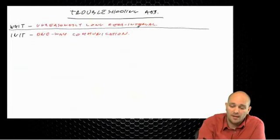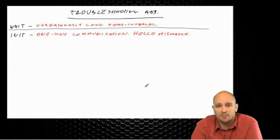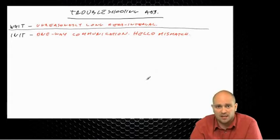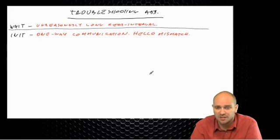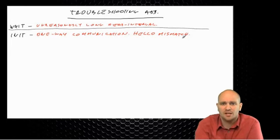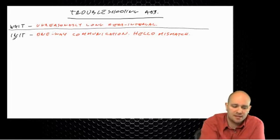Another reason for being stuck in init is hello mismatch. Hello mismatch means some parameters in the hello packets don't match. What needs to match is the hello timer, the dead interval, the area ID, the area type, and the subnet — though on point-to-point interfaces, the subnet is not as relevant.